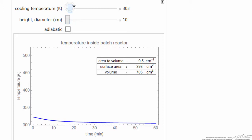If I raise the cooling temperature a little bit, I'll get some reaction, but if I increase the size, I get a dramatic change in temperature because now we've decreased the surface area. Let's look at that again, the surface area to volume, 0.5, now 0.14.